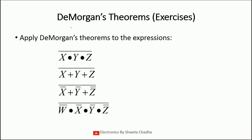Let us try to simplify a few examples based on De Morgan's theorem. Here I have taken 4 examples. The first is x dot y dot z whole bar. Applying De Morgan's theorem, x bar, dot becomes plus, y bar, dot becomes plus, and z bar. So x dot y dot z whole bar equals x bar plus y bar plus z bar.